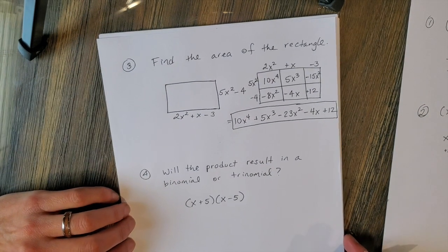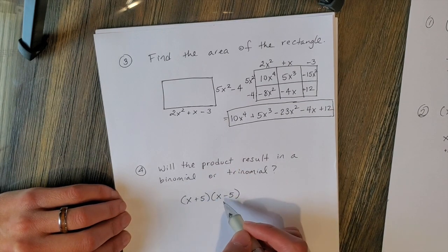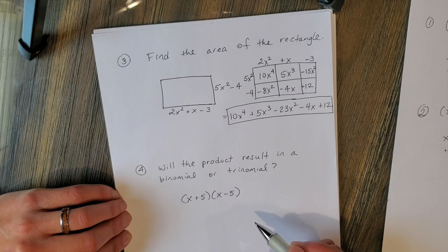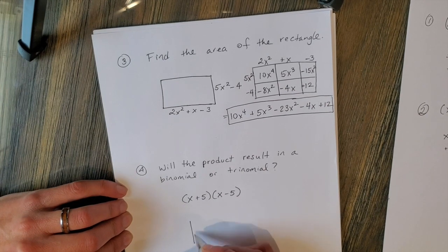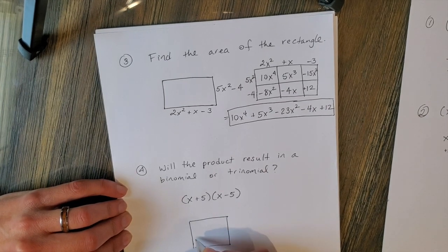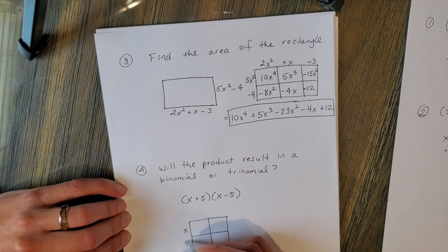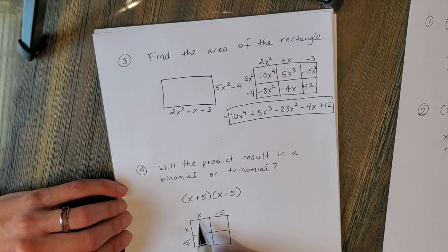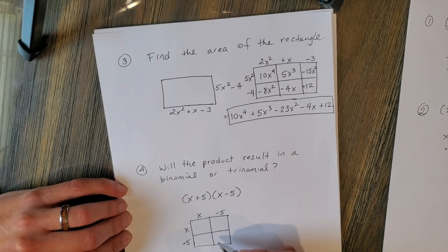Next example. Notice the way this is asked: will the product — in other words, what I get after multiplying — result in a binomial or a trinomial? Let's multiply and find out. It's a 2 by 2 because I have a binomial times a binomial. I'll put x plus 5 along one side and x minus 5 along the top. Since it's a 2 by 2, it doesn't matter which way.